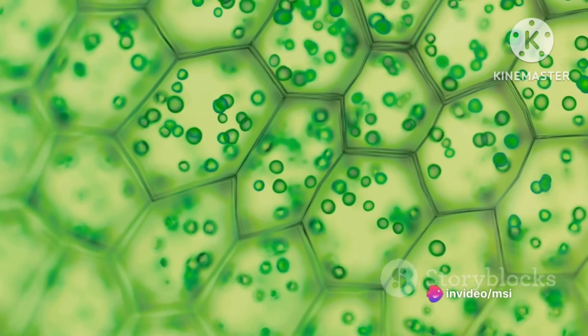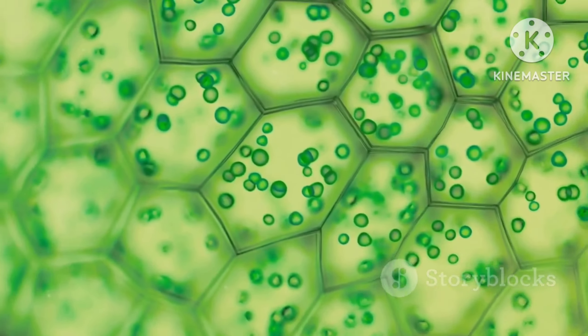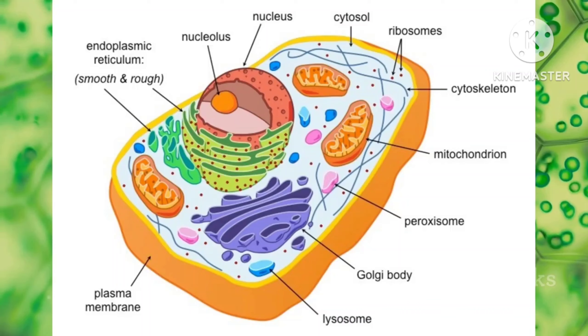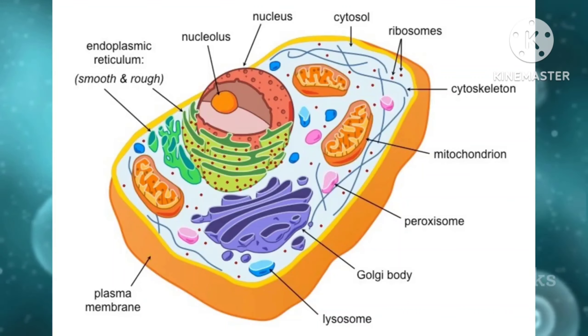Eukaryotic cells are like a bustling metropolitan city, with a wide variety of specialized organelles, each performing a dedicated function. Powerhouses for energy production, a sorting and packaging center, waste disposal units, and an endoplasmic reticulum for protein synthesis and transport.